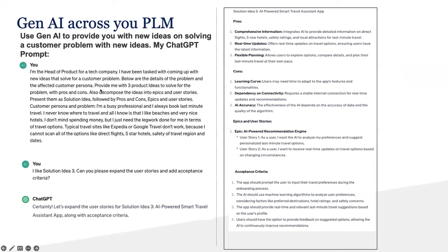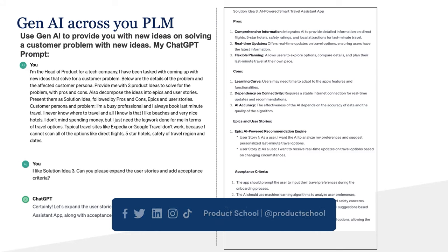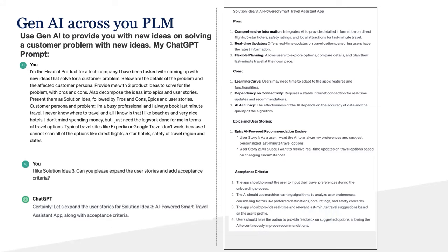Now let's jump into how you can use Gen AI across your product lifecycle management. Here I'm using ChatGPT — the free version, which is GPT 3.5. If you want to get better at using these Gen AI tools, you have to get really good at prompt writing. I'd highly suggest you take a class. LinkedIn Learning has a class around how to use Gen AI for product management. It's free, takes less than 20 minutes, and you'll walk away feeling like you've actually learned something.